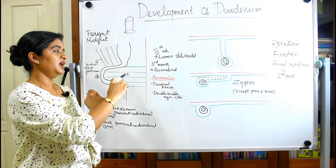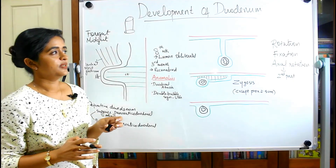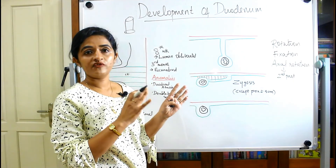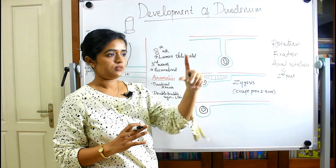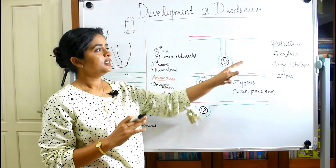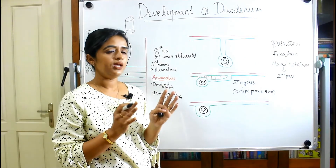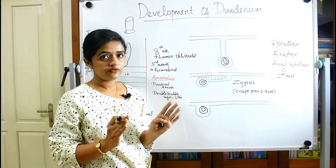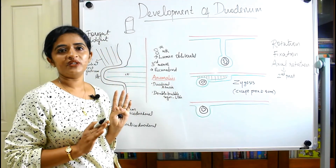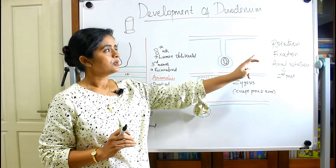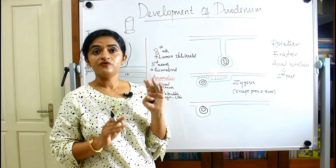The entire process of development of the duodenum involves three main steps: first, rotation — the 90-degree rotation we have just seen; second, fixation; and third, axial rotation. These are the three important aspects you should cover when asked to write a short note on the development of the duodenum, along with the relevant diagrams, to get a better mark.